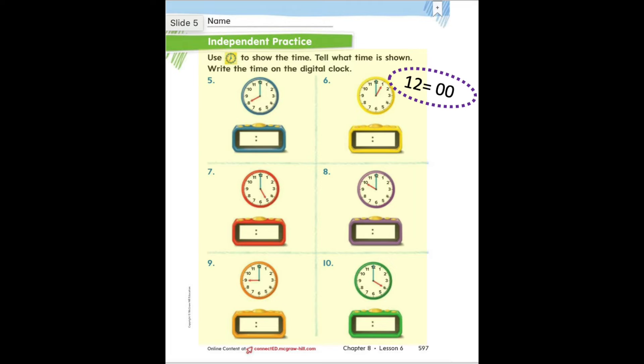For numbers five through ten, you are going to be doing the same thing. You are going to be reading the analog clock and writing the time on the digital clock. This time I've not included the lines on the digital clocks. So it will be your job to remember where you put the hour number and where you put the minutes number.